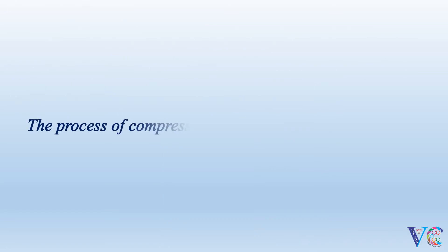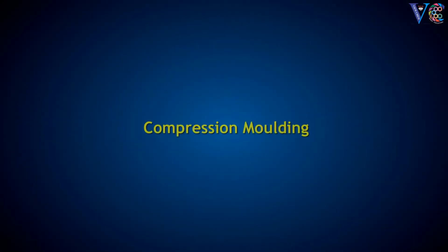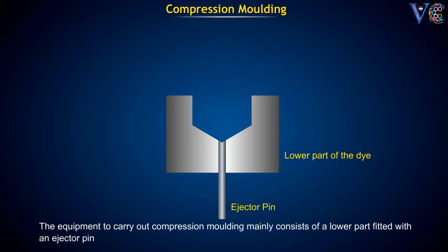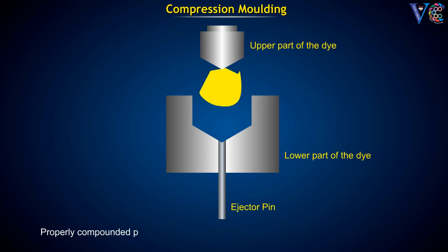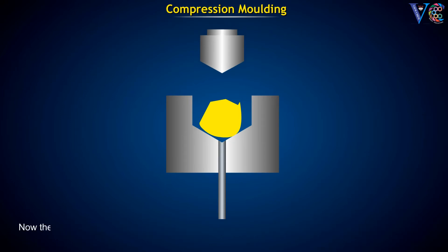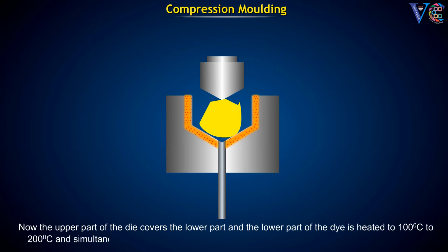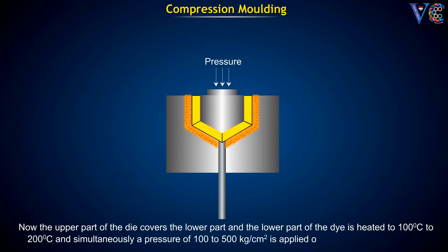The process of compression molding can be visualized as follows. The equipment mainly consists of a lower part with an ejector pin and an upper part. Properly compounded polymer is placed in the lower part of the die in the designated area. The upper part of the die covers the lower part, and the lower part of the die is heated to 100–200 degrees centigrade. Simultaneously, a pressure of 100 to 500 kilograms per centimeter square is applied on the upper part of the die.